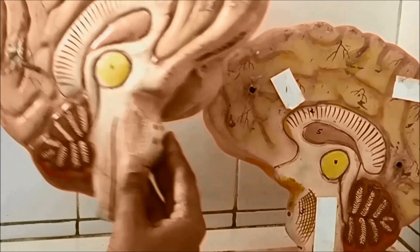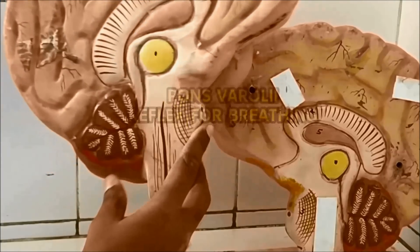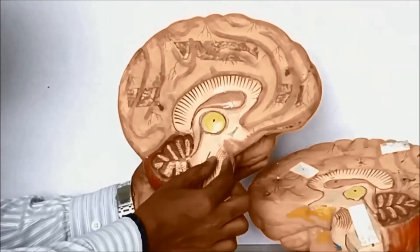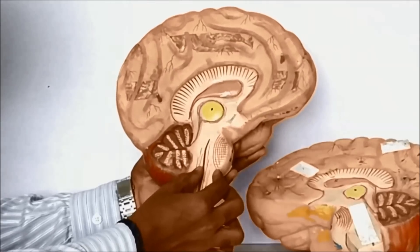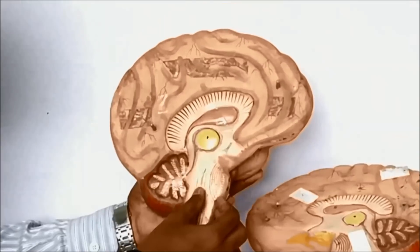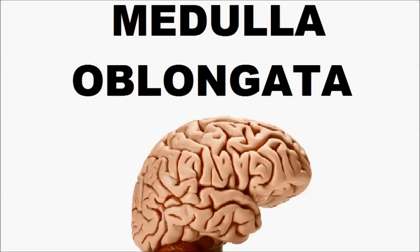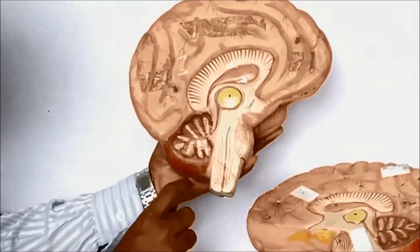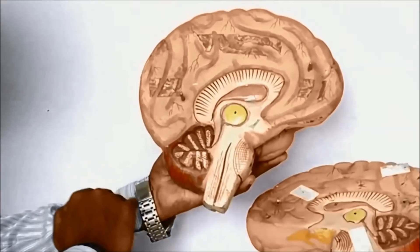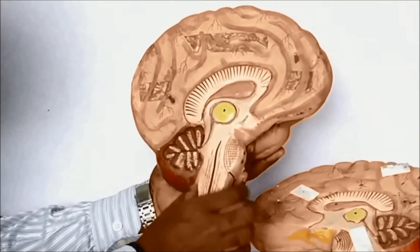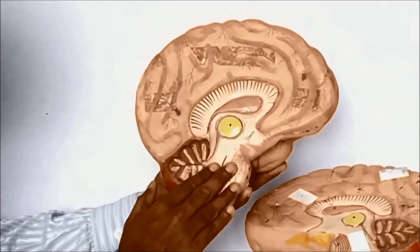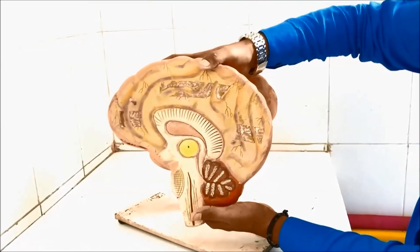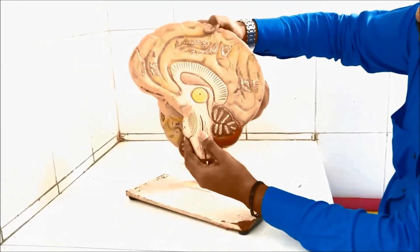Medulla oblongata is the most important part of the brain. It is the extension of the spinal cord and continues into the spinal cord. The medulla oblongata controls all involuntary reflexes such as circulation, digestion, and respiration. A sudden injury to the medulla oblongata is extremely dangerous, making it the most critical part of the brain.